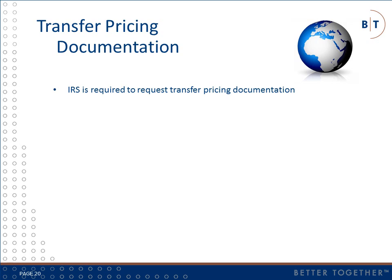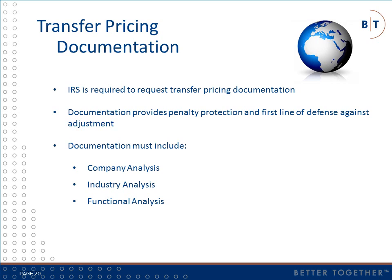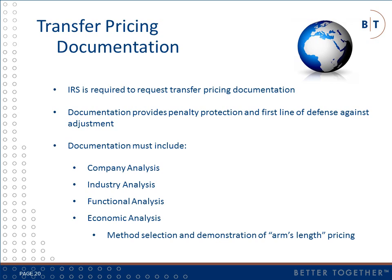Adequate transfer pricing documentation is key to protecting against penalty assessments. In the U.S., taxpayers are required to have documentation in place at the time a tax return is filed and have 30 days to send documentation to the IRS after receiving an initial request. Having documentation in place is not a guarantee against an adjustment, but it provides protection from penalty assessment and is critical as a first line of defense. Documentation must include a company analysis, an industry analysis, a functional analysis covering assets employed, risks assumed, and functions performed in the transaction, and most importantly, an economic analysis in which the best method is selected for benchmarking the transaction along with a demonstration of how the pricing is arm's length.